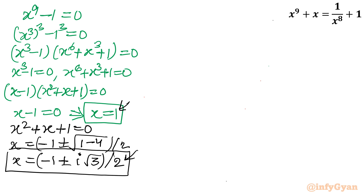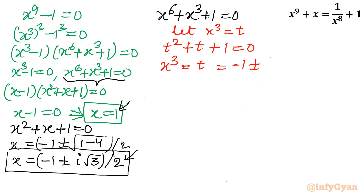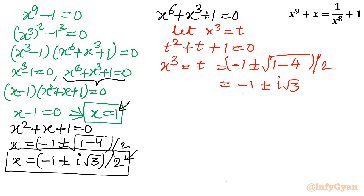Now the hexic equation: x^6 + x^3 + 1 = 0. Using the substitution t = x^3, this becomes t^2 + t + 1 = 0, which is quadratic in x^3. Solving: x^3 = t = (-1 ± i√3) / 2. This result can be written in Euler's form as e^(±i·2π/3).